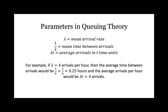One of the basic parameters in queuing theory is the arrival rate — the number of arrivals per unit time. Lambda is the mean arrival rate, 1 over lambda is the mean time between arrivals, and lambda times t equals the average arrivals in t time units. For example, if lambda equals 4 arrivals per hour, then the average time between arrivals would be 1 over 4, which is a quarter of an hour, and the average arrivals per hour would be 4 arrivals per hour.